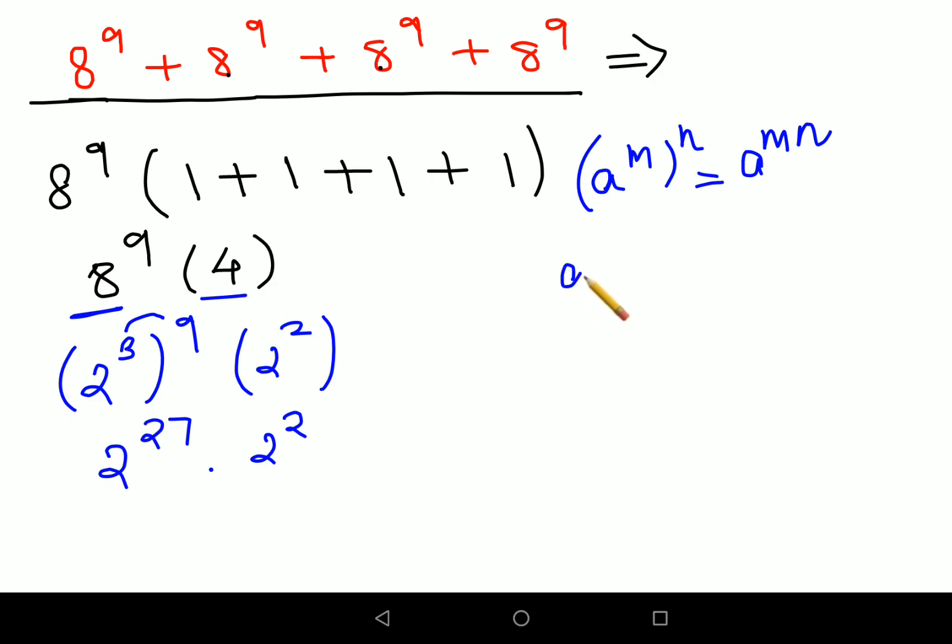So now a raised to m into a raised to n. Basically the bases are same and the indices are different and things are getting multiplied. So here in this case what you can do is you will add the index. So final answer for this one will be 2 raised to 27 plus 2 that gets you 2 raised to 29.